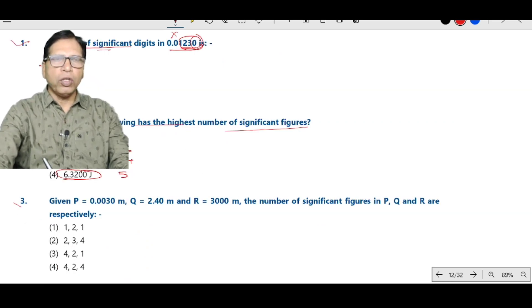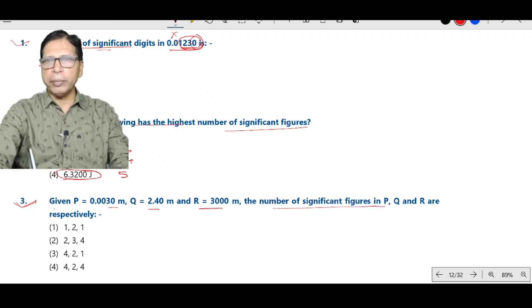Now question number 3. Given P equal to 0.0030, Q equal to this, R equal to this, the number of significant figures in P, Q, R are respectively. P has significant figures only 2, because these two zeros are not significant. Here, number of significant figures is 3 and R has significant figures of 4. So, 2, 3, 4 is the correct option.